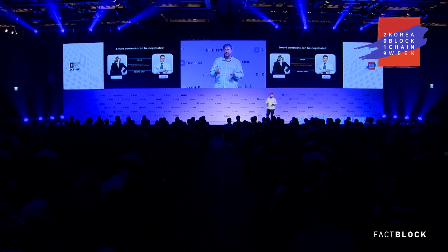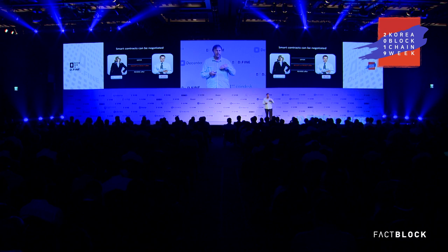The first takeaway: smart contracts aren't just programs written by programmers running on a blockchain. That trust-minimized code is a very important part of it, but the next generation of smart contracts are going to be things that non-programmers negotiate between them, much like you would negotiate a traditional contract. Alice gives an offer to Bob; Bob can accept or reject that offer.